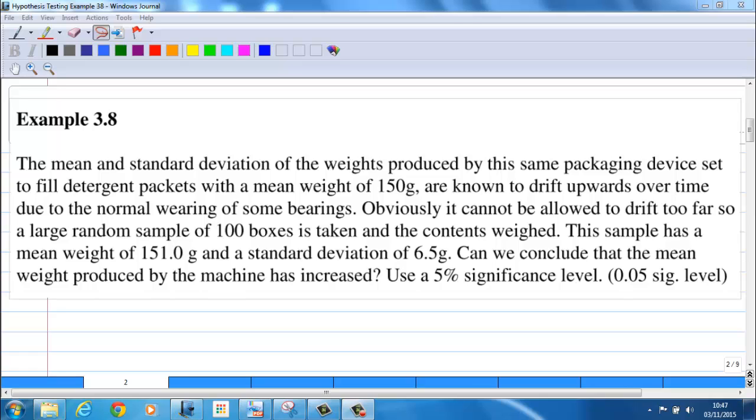The mean and standard deviation of the weights produced by the same packaging device, in example 3.7, set to fill detergent packages with a mean weight of 150g, are known to drift upwards over time due to the normal wearing of some bearings.